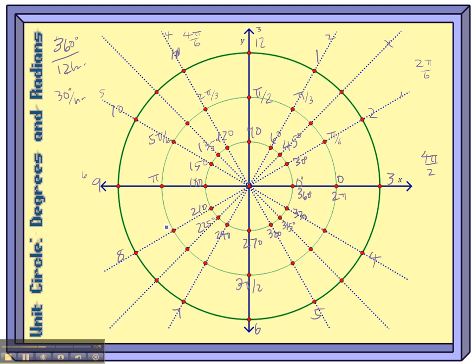This must be 7π over 6. The next one would be 8π over 6, which reduces to 4 thirds, 4π over 3. So 8 sixths, straight down is 9 sixths, which reduces to 3π over 2.